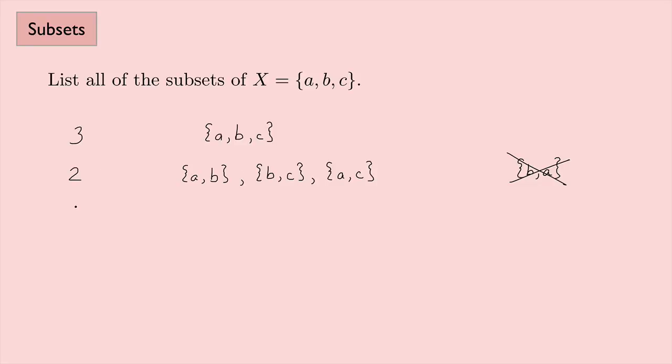How about the subsets that have one element? Well, these are just going to be the individual elements themselves. So I have the set that has A, the set that has B, and the set that has C.